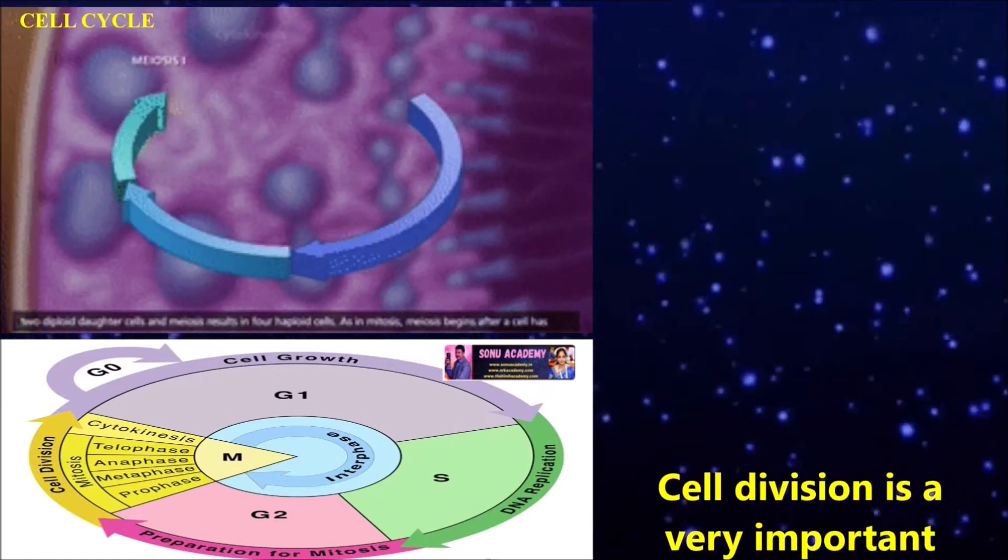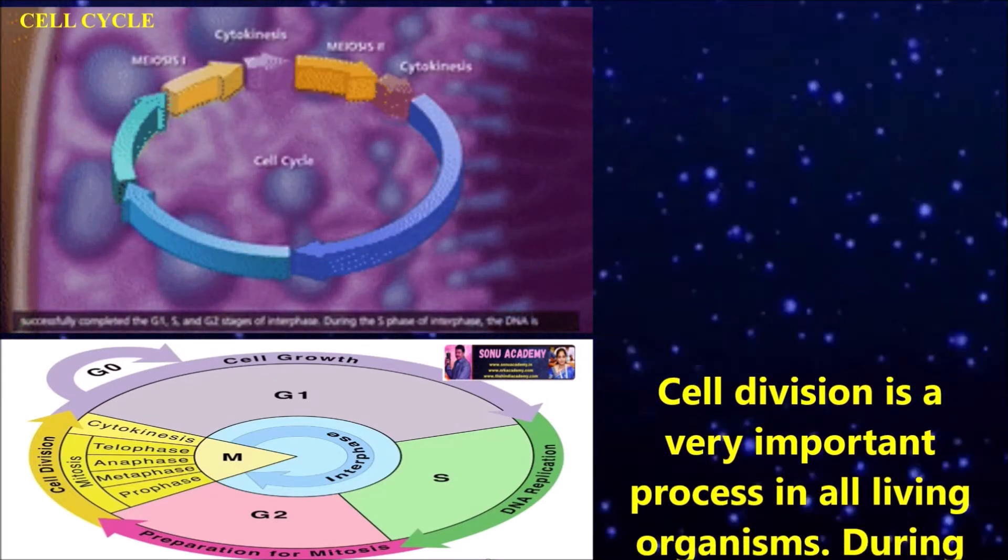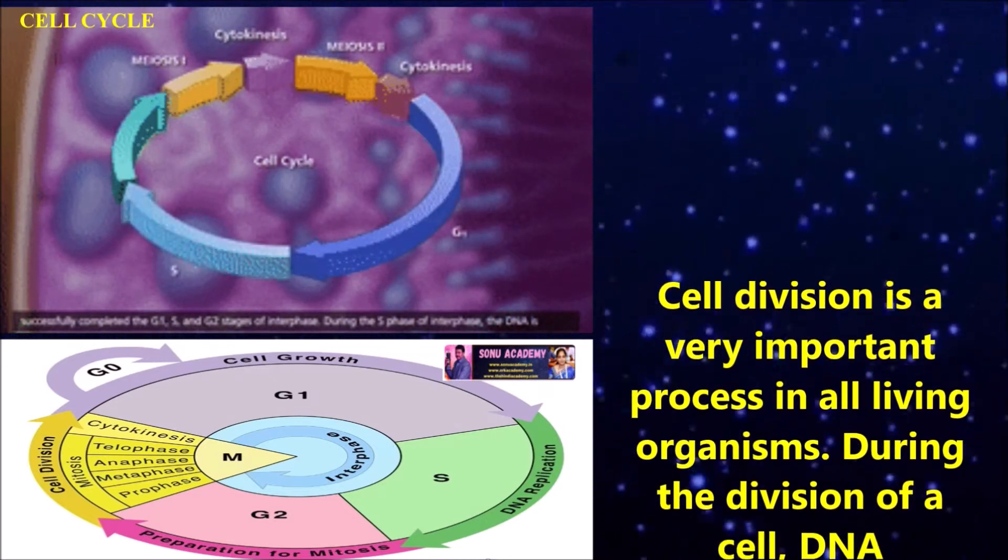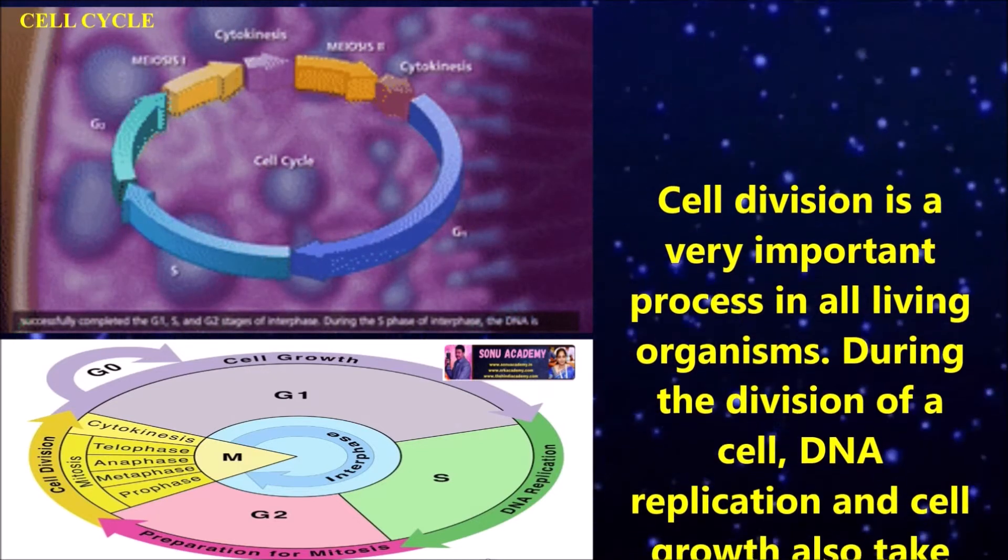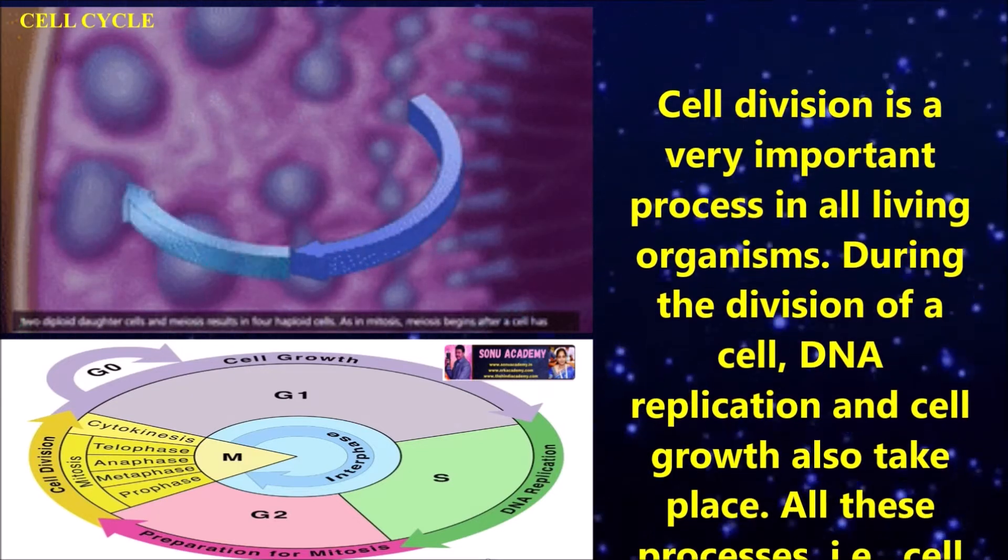Children, first let us discuss what is cell cycle. Cell division is a very important process in all living organisms. During the division of a cell, DNA replication and cell growth also take place.